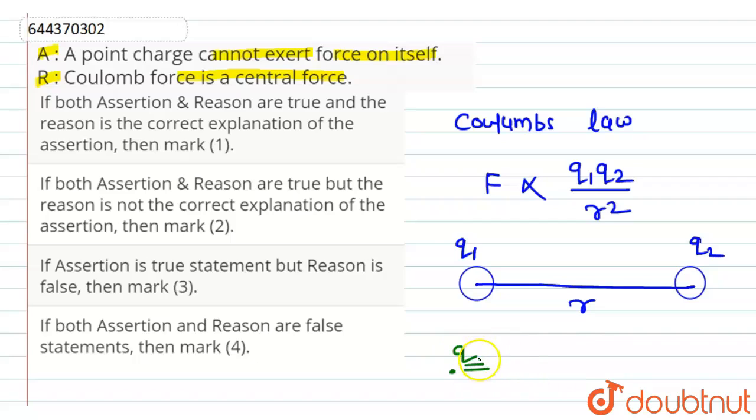For electrostatic force of attraction there must be two charges so that there is attraction or repulsion between them. So the statement of assertion that a point charge cannot exert force on itself is true.